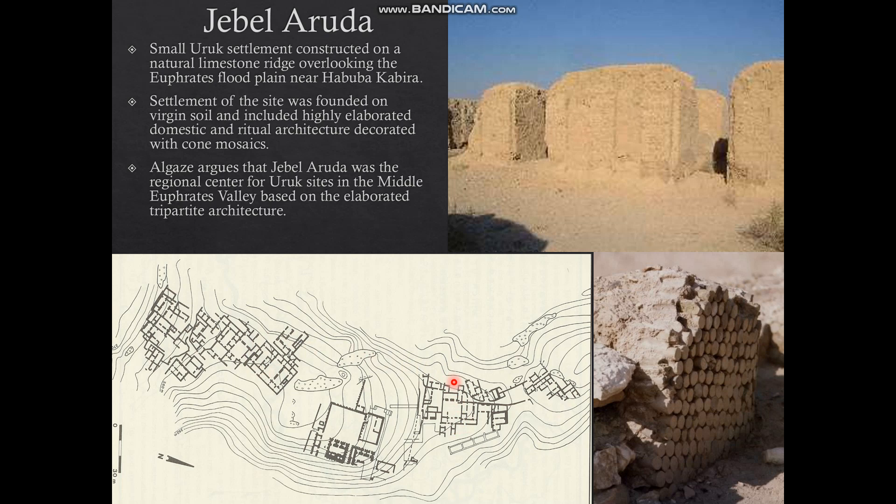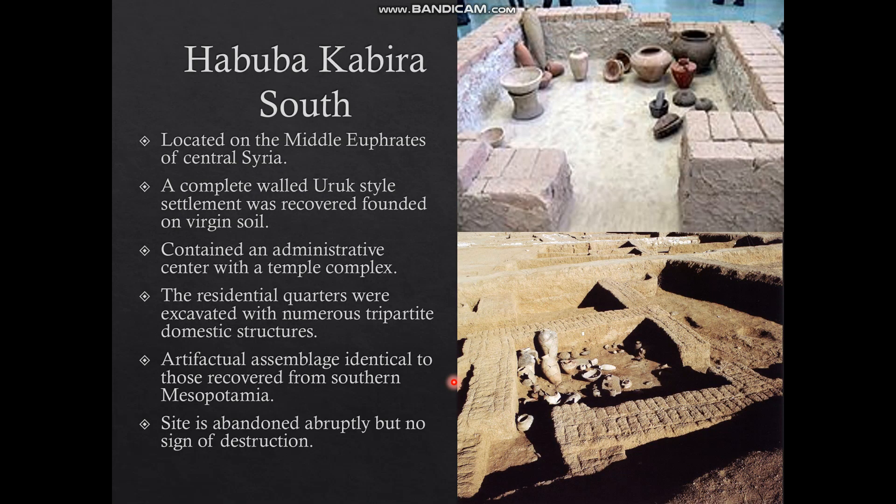Contrasted to Jebel Arruda is the nearby site of Habuba Kabira. Like Jebel Arruda, it's also founded on virgin soil and has its own administrative center with a temple complex, but these are not as large or elaborated as at Jebel Arruda, and the residential quarters are much more common and smaller — numerous tripartite domestic structures. The artifact assemblages are identical to those of middle to lower class households within Uruk, so the assemblage here more or less looks transplanted onto the landscape at Habuba Kabira South.